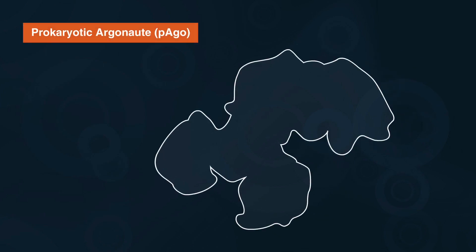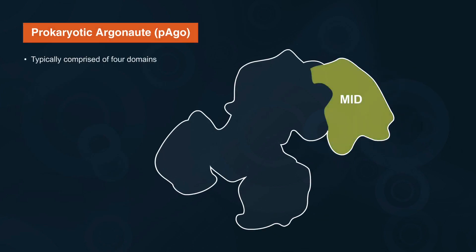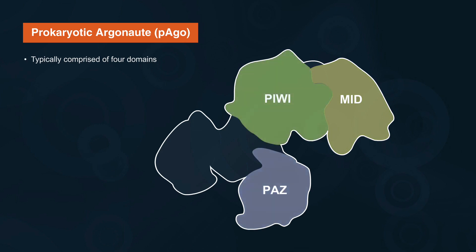Prokaryotic argonaut proteins are typically comprised of four domains: the MID domain, the PAZ domain, the PIWI domain, and the N-domain.